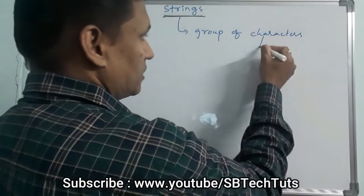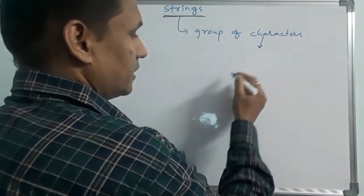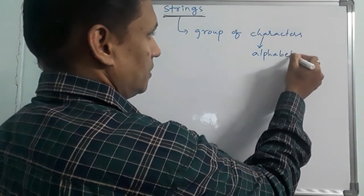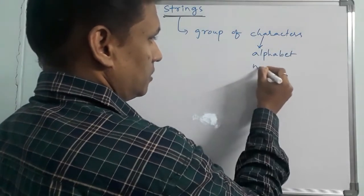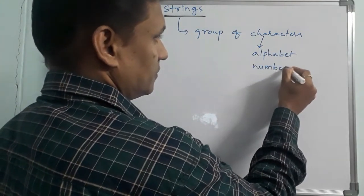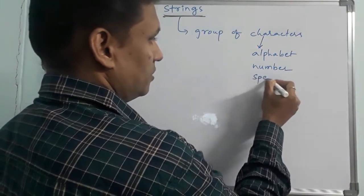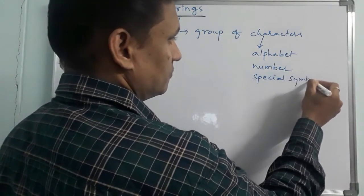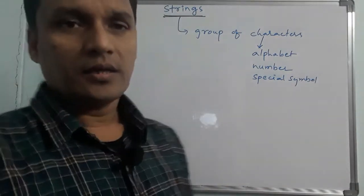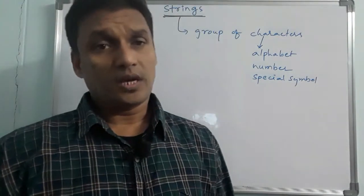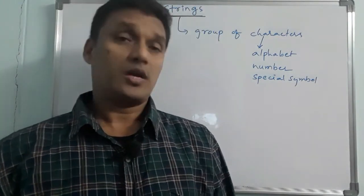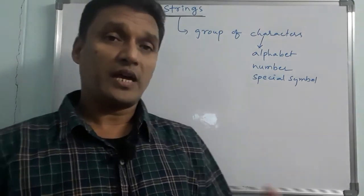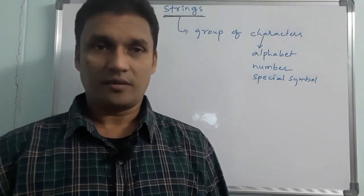So, what is meant by character? A character may be an alphabet, a number, or any special symbol. So a character is either an alphabet, a number, or special symbols. The combination of characters is nothing but a string.